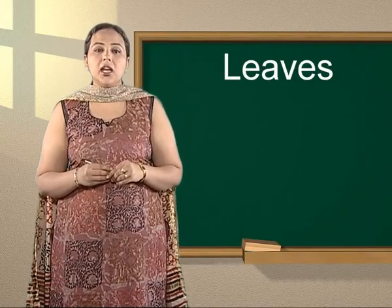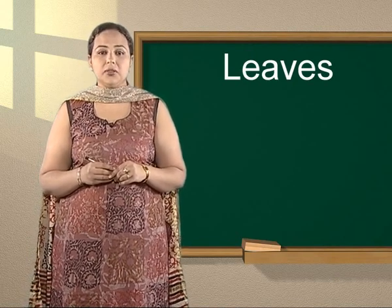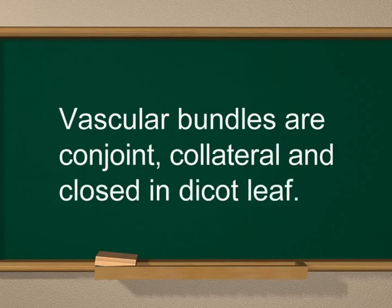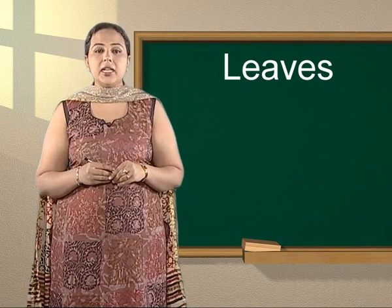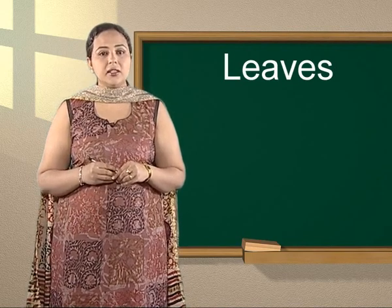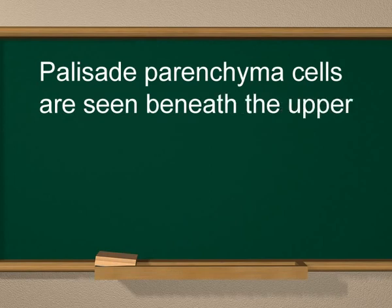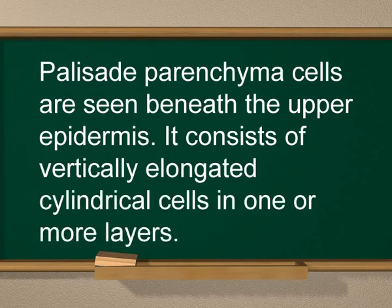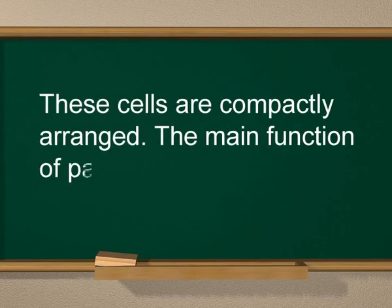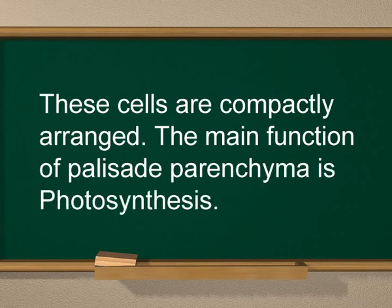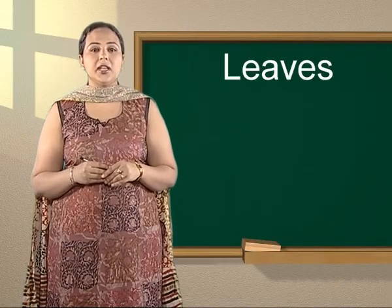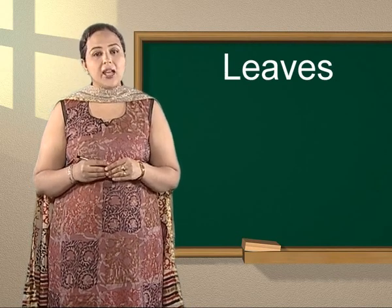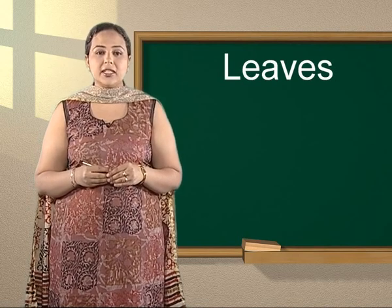Q8: What type of vascular bundles are found in a dicot leaf? Answer: Vascular bundles are conjoint, collateral and closed in a dicot leaf. Q9: Where is palisade parenchyma found in leaves? Answer: Palisade parenchyma cells are seen beneath the upper epidermis; they consist of vertically elongated cylindrical cells in one or more layers, compactly arranged — their main function is photosynthesis. I hope I have made a successful attempt to clear the concepts regarding the types of leaves. This will help you in fetching good marks in the exam. Thanks for your cooperation and attention. Looking forward to the next class!